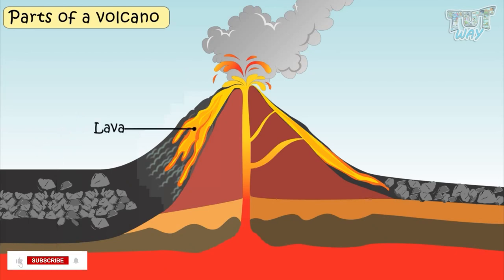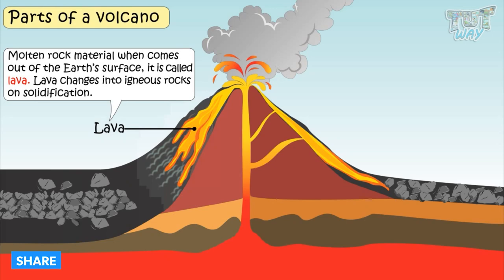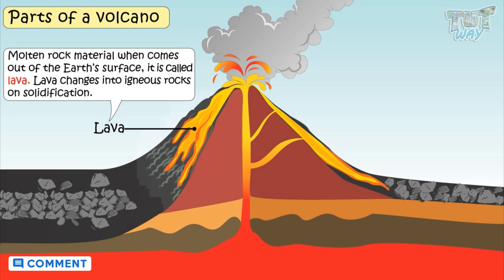Lava. Molten rock material, when it comes out of the Earth's surface, is called lava. And on solidification, this lava turns into igneous rocks.